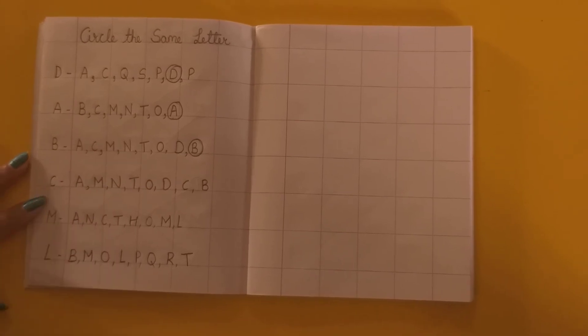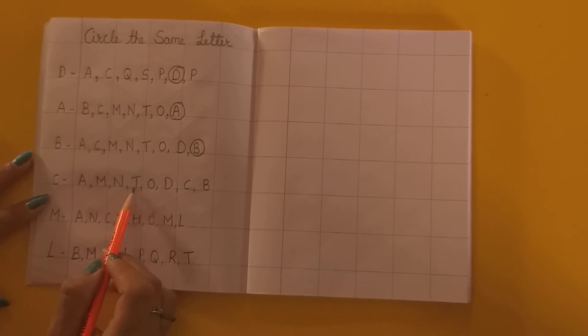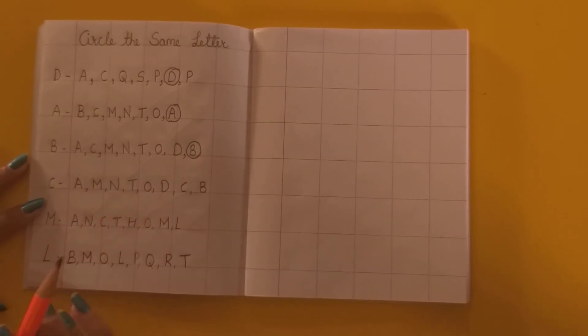Now the next letter is C. C kidhar hai? Dundou, dundou, dundou. Ma'am ko toh nahi pata chal raha hai. Kidhar hai? Yeh raa C.